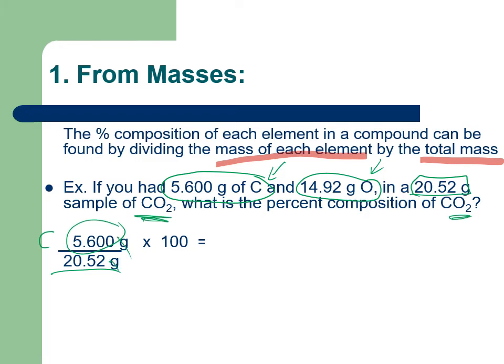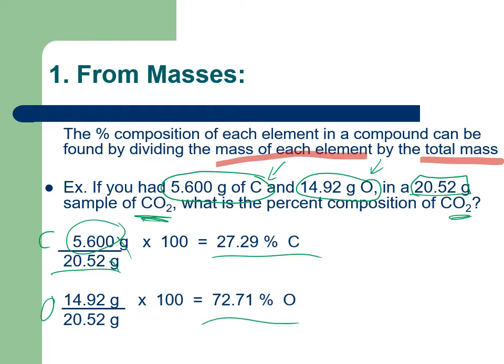Grams will cancel out in this case—whatever the mass is measured in will cancel out as long as you have it on the numerator and the denominator. Multiply by 100 to express it as a percentage. Do the same thing for oxygen, and we get our percent composition of this particular substance: 27.29% carbon, 72.71% oxygen.